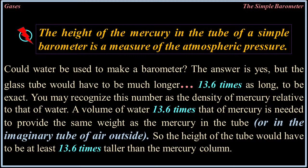The height of the mercury in the tube of a simple barometer is a measure of atmospheric pressure. Could water be used to make a barometer? The answer is yes, but the glass tube would have to be much longer — 13.6 times as long, to be exact. You may recognize this number as the density of mercury relative to that of water. The volume of water 13.6 times that of mercury is needed to provide the same weight as mercury in the tube, or in the imaginary tube of outside air.